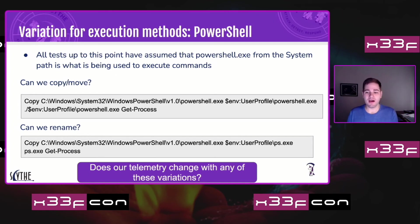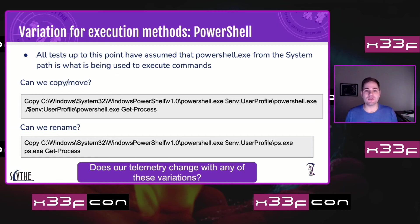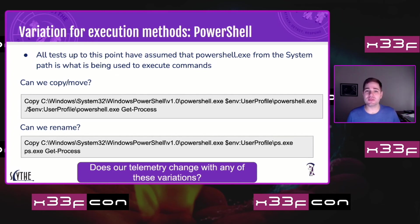Same with renaming: if people are looking for PowerShell.exe regardless of path, renaming will bypass that. Every environment's detections are going to be different. Some can take all or part of Sigma rules in addition to their own custom rules or EDR out-of-the-box detections. These tests reveal all those assumptions about what works in your environment.